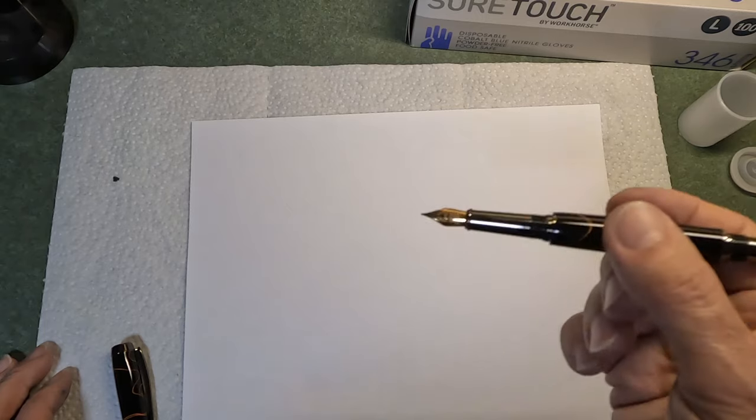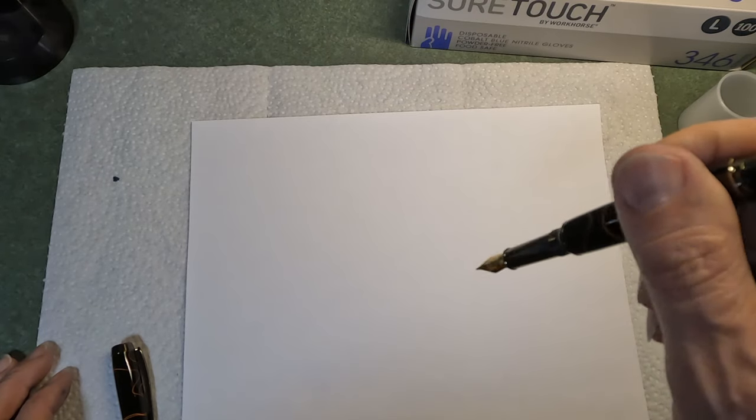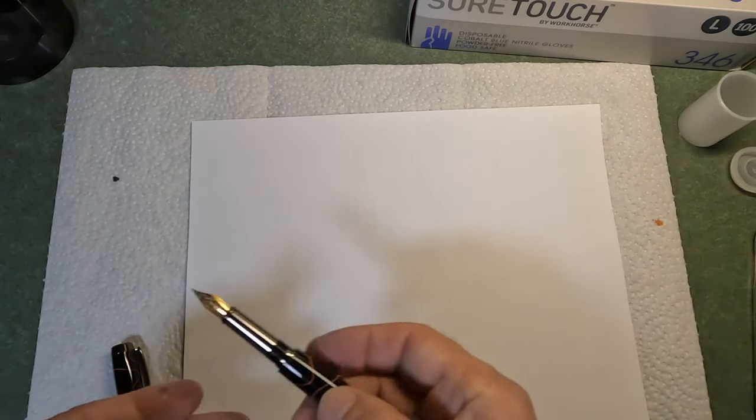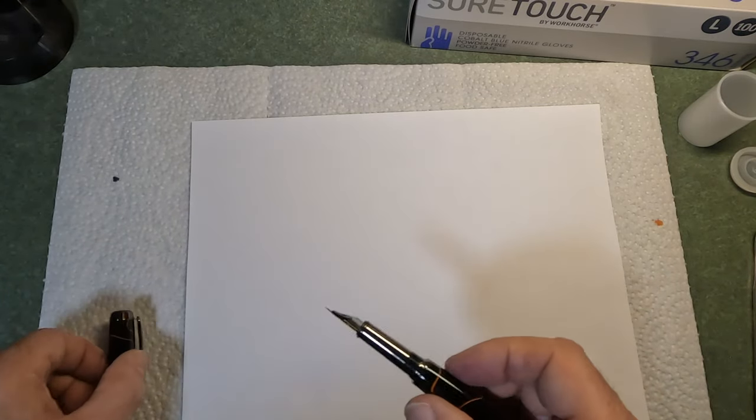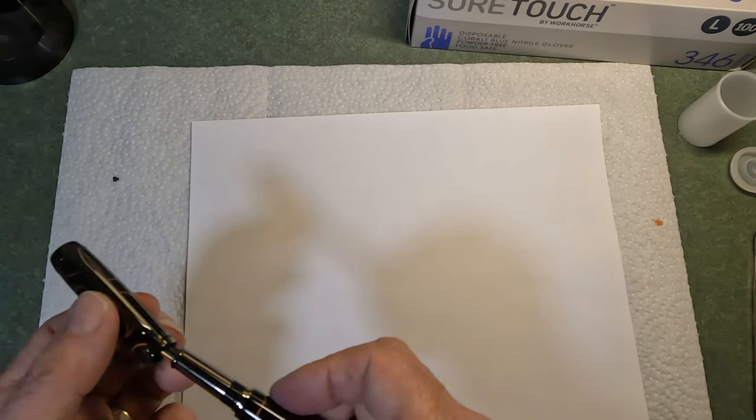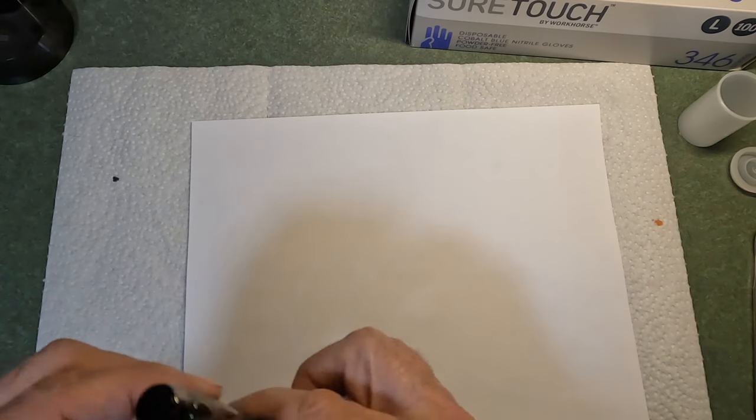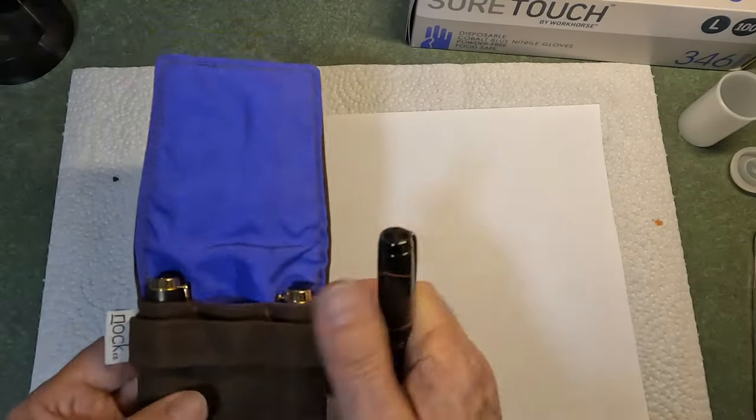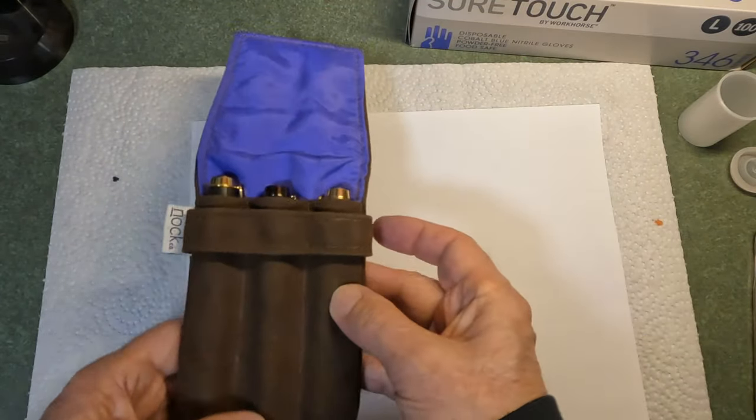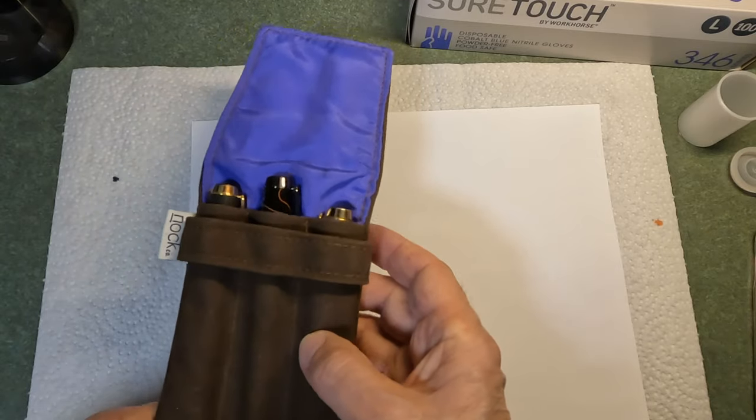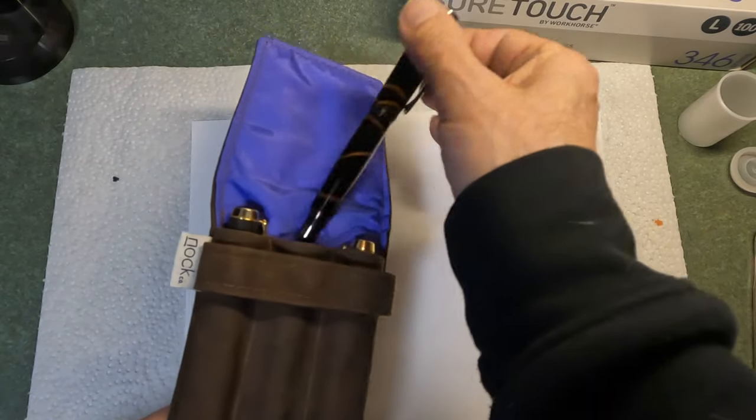But whereas if this pen is stored nib side down and it becomes flooded, then all of a sudden you open it, you've got ink all over the place. So better to store them nib side up. And I actually store mine inside a protective padded case so that they're further protected from any damage.